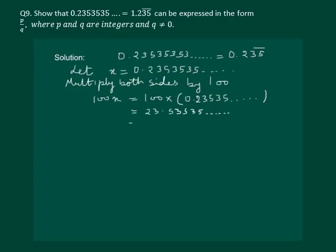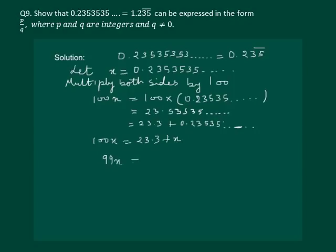This can be written as 23.3 plus 0.23535 and so on, but this is equal to x. Hence we have 100x equal to 23.3 plus x. On solving we will get 99x equal to 23.3.